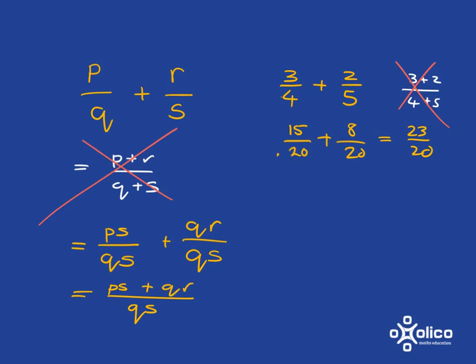Now we have a common denominator. And so we get ps plus qr. Looks frightfully complicated and messy, this expression, but it's just expressing exactly what we did with numbers.